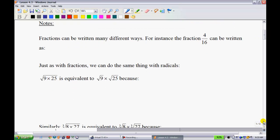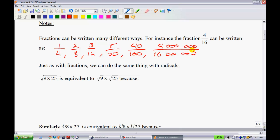As we know, fractions can be written in many different ways. For instance, the fraction 4 over 16 can be written as 1 over 4 if you reduced it. If you multiplied both the numerator and denominator by 2, you'd have 2 over 8. If you multiplied the first one by 3, you could have 3 over 12. These are all essentially the same fractions. The list goes on and on.